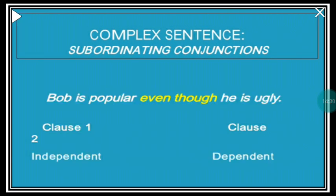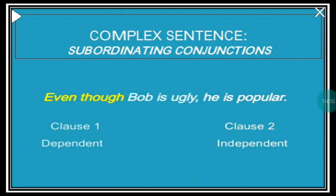'Bob is popular even though he is ugly.' The independent clause is 'Bob is popular.' 'Even though' is a subordinating conjunction, and 'even though he is ugly' is the dependent clause. If we rewrite it as 'Even though Bob is ugly, he is popular' — 'even though Bob is ugly' becomes the dependent clause and 'he is popular' remains the independent clause. 'Even though Bob is ugly' does not make complete sense, so it is the subordinate clause.